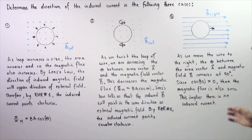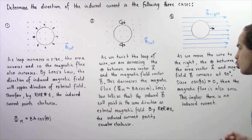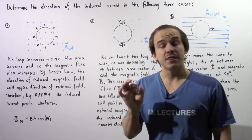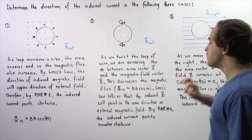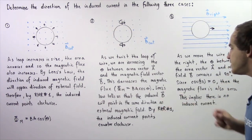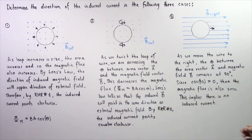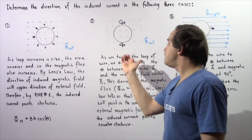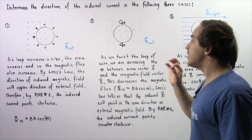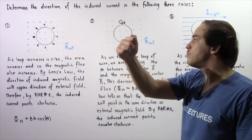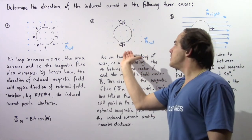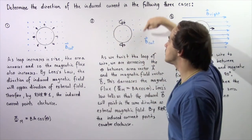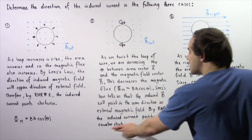Now we're ready to apply Lenz's Law. Lenz's Law tells us that the induced magnetic field B will point in the same direction as our external magnetic field, because we have a decreasing magnetic flux. Using right-hand rule number one, we take our right hand and wrap it around the wire so that our fingers curl in the same direction as the induced magnetic field, which points out of the board. We extend the thumb, and in this case the thumb points in the counterclockwise direction. So our induced current points counterclockwise.